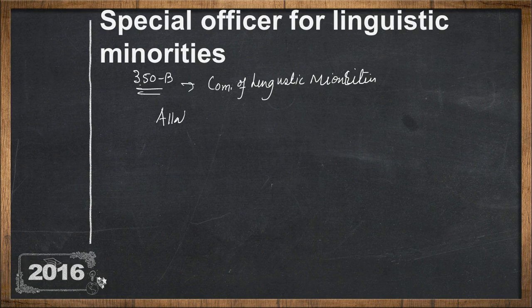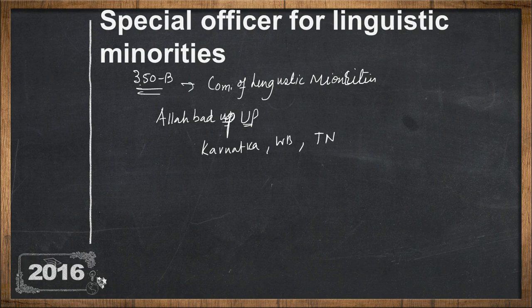The headquarters is in Allahabad, Uttar Pradesh. There are three regional offices — one each in Karnataka, West Bengal, and Tamil Nadu. The Commissioner is assisted by deputy commissioners, who also maintain liaison with state governments and union territories.